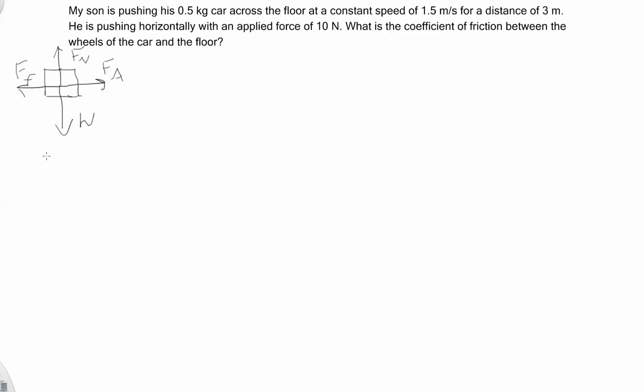And now I'm going to pull out my numbers, what I know from the word problem. So, here is my mass of 0.5 kilograms. I know its mass is measured in kilograms. And a constant speed of 1.5 meters per second. Put that down. And then a distance of 3 meters. What else here? We have an applied force of 10 newtons. And the coefficient of friction is what we're solving for. That's my unknown, so I'll put that down as well.